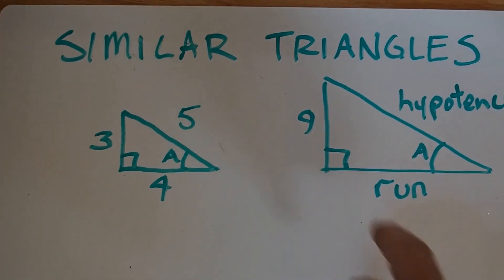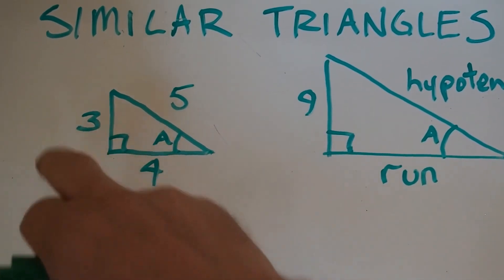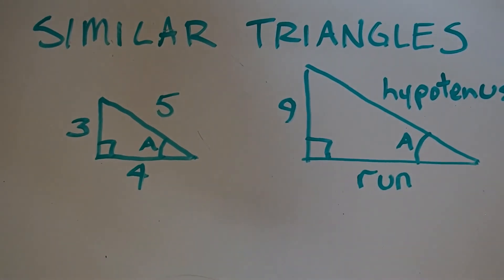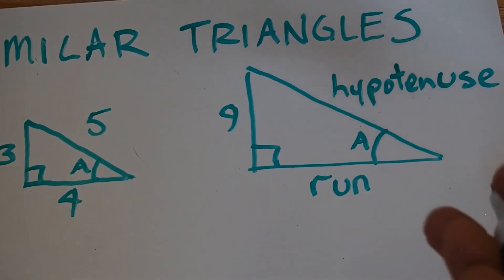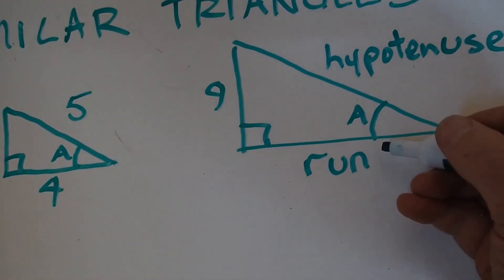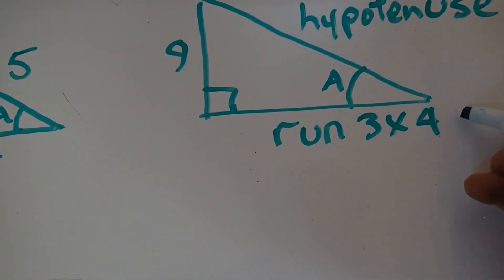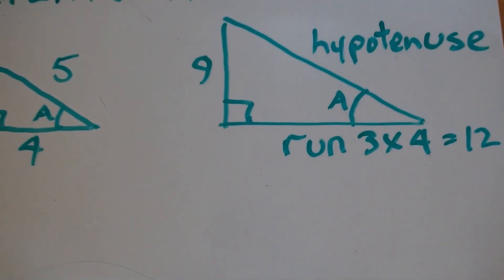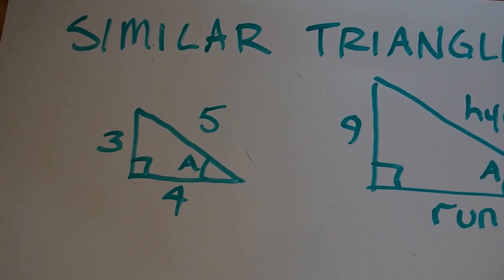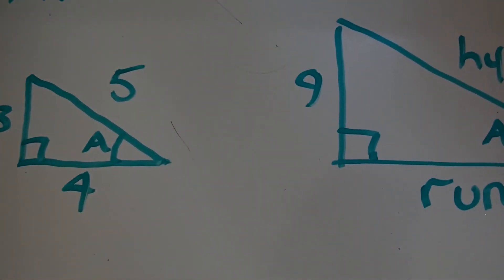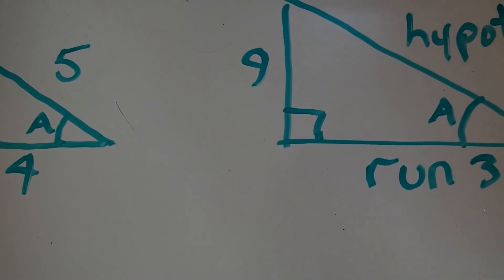In this case, the rise is three times bigger on the rise of the big triangle than it is on the small triangle. Therefore, the run is three times bigger. So the run of this one is three times four, which is twelve. And the hypotenuse is also three times bigger. So the hypotenuse is five times three, which is fifteen.